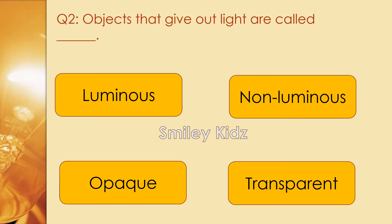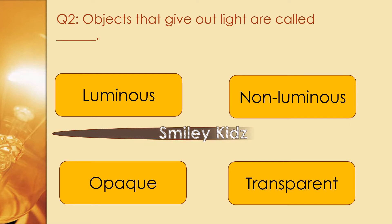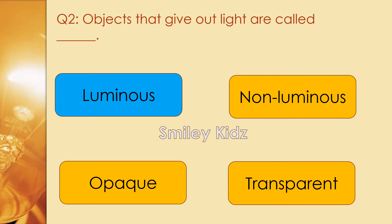Question number 2. Objects that give out light are called. Options are luminous, non-luminous, opaque, and transparent. The right answer is luminous. Objects that give out light are called luminous objects.